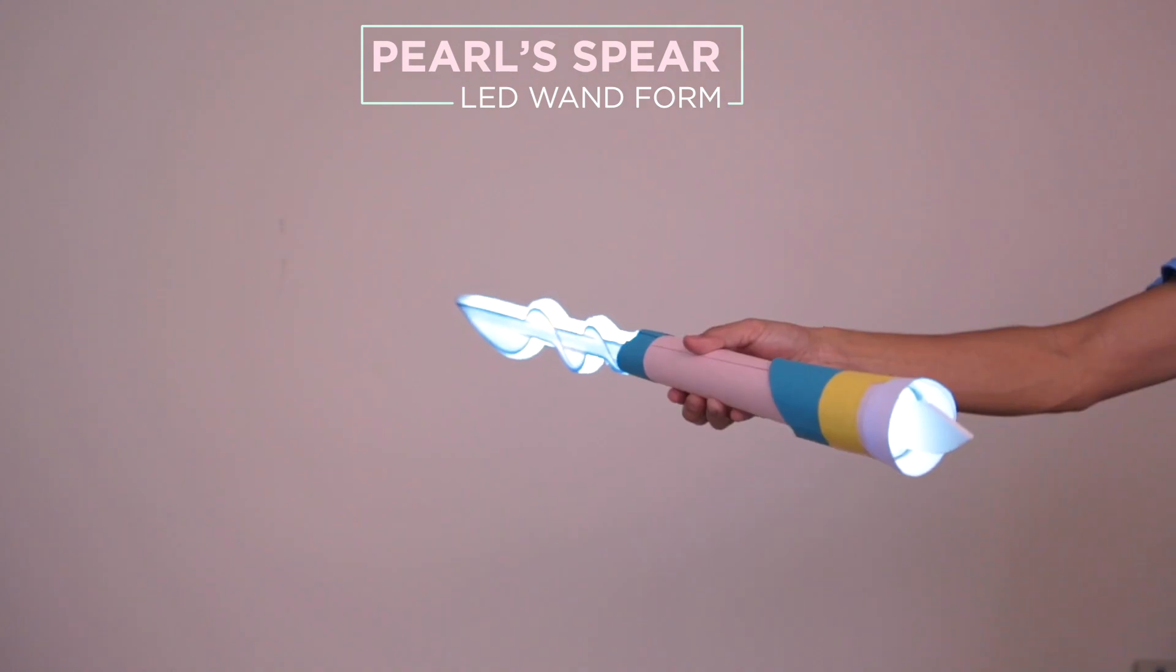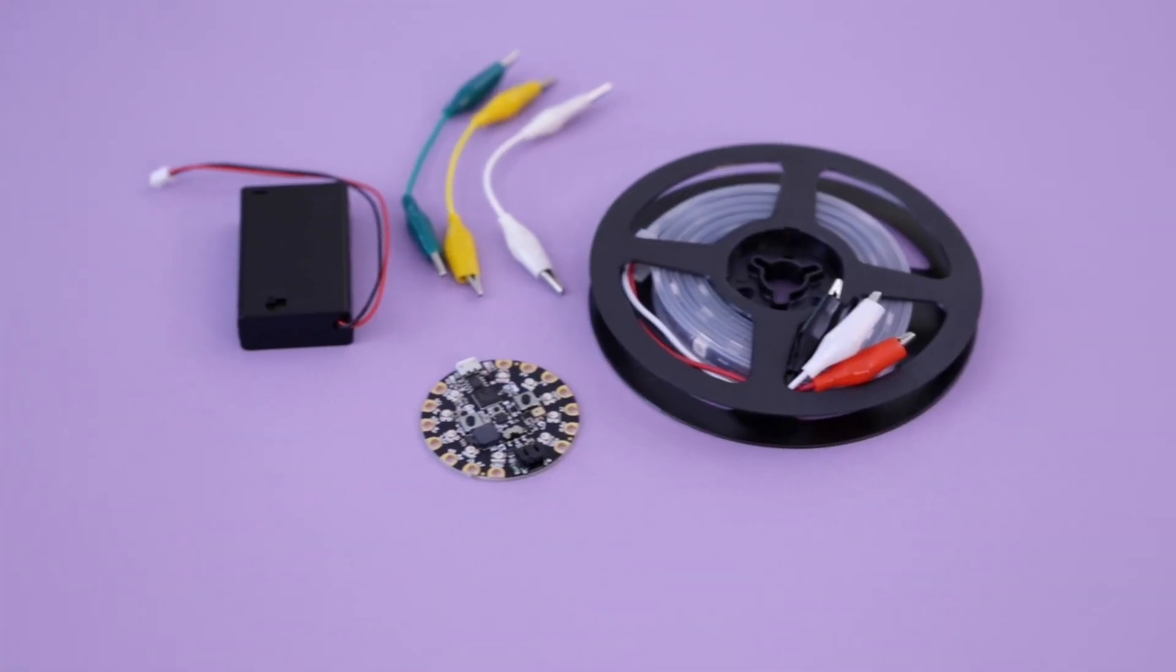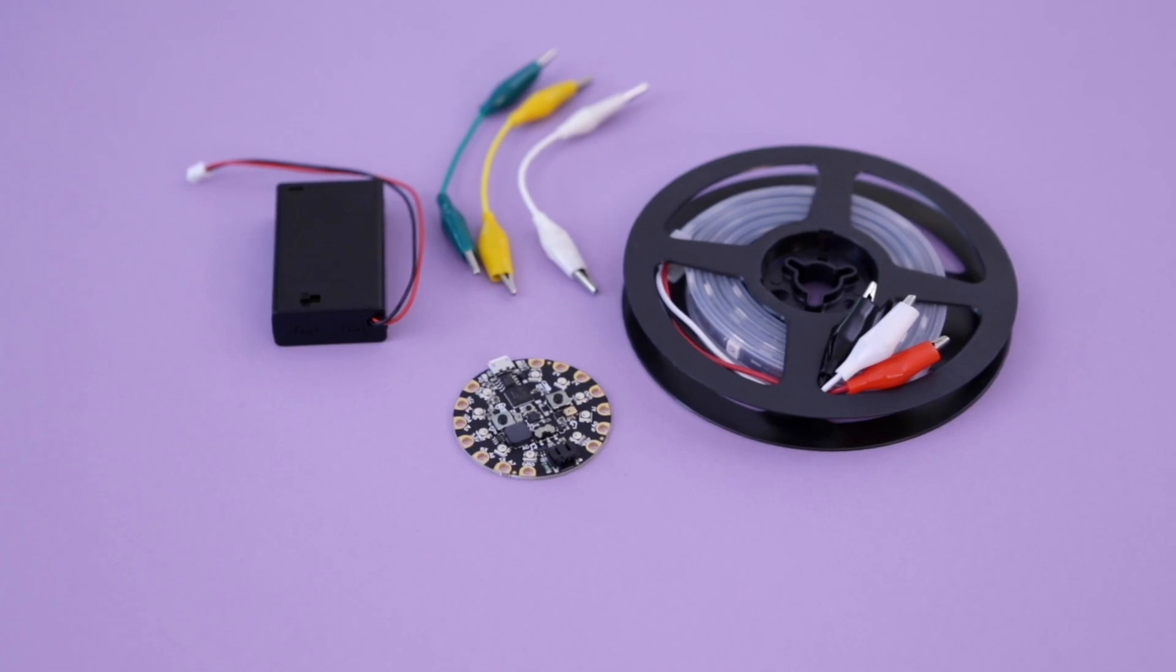We made Pearl's Gem Wand so it lights up and makes sound effects when you swing it around. You too can build your own. Get the parts to build this project. Links are in the description.